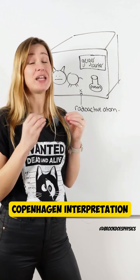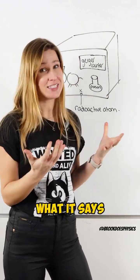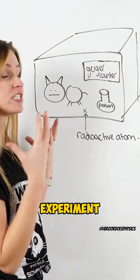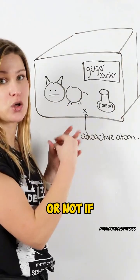This is known as the Copenhagen interpretation. So what it says is that we've got a radioactive atom here and the thought experiment is that there's a 50% chance that it's going to decay or not.